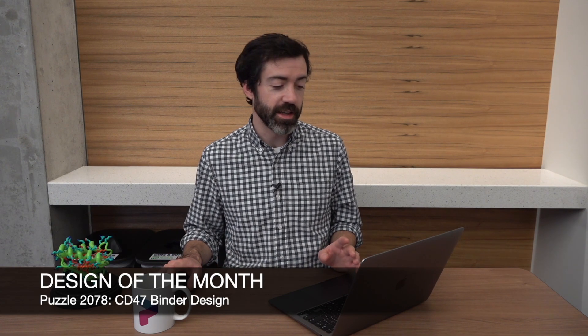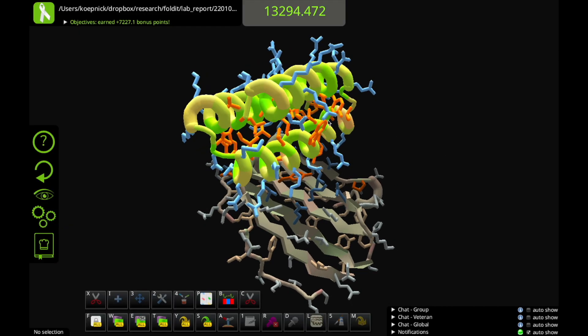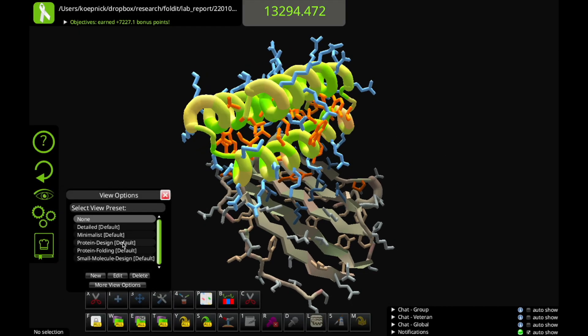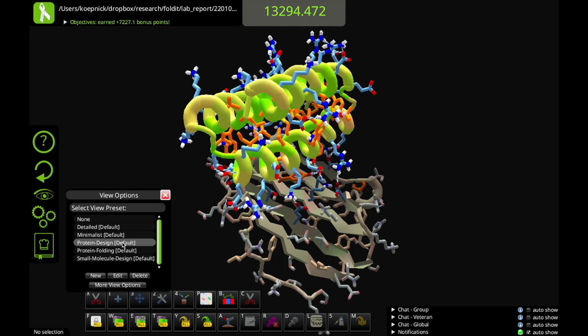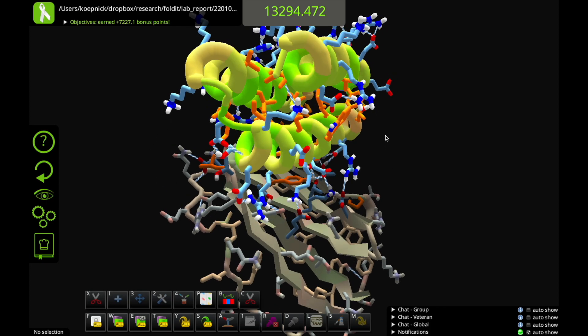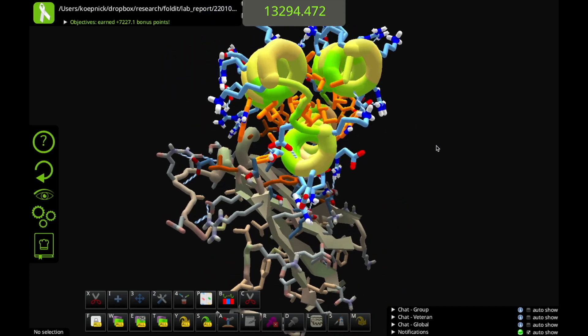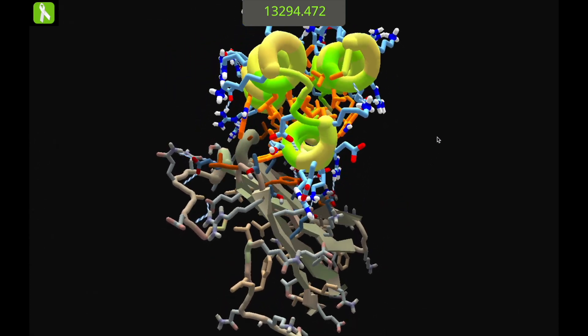And with that, I want to jump straight into this month's design of the month. This month we have an anonymous design for puzzle 2078. This is a CD47 binder design puzzle. So when we open this up, I'm going to go to our protein design view preset. So right off the bat, this looks like a solid protein design.